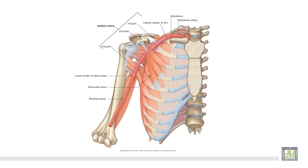To review: this is the axillary artery — a continuation of the subclavian artery. It starts at the outer border of the first rib and ends at the lower border of the teres major to become the brachial artery. It is subdivided into three parts by the pectoralis minor muscle.